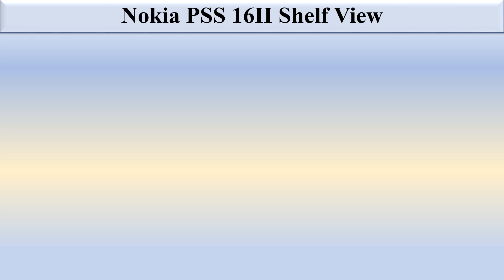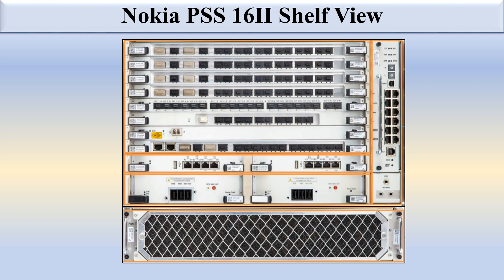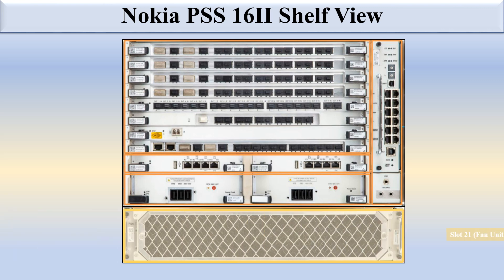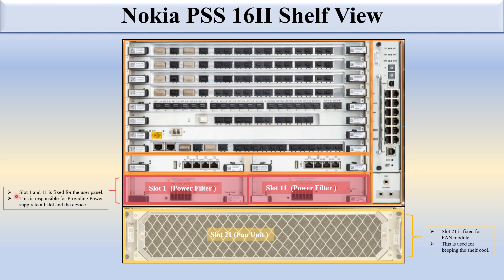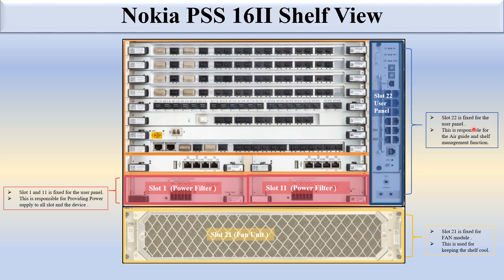Looking at the real physical view, the Nokia PSS 1611 looks like this. Slot 21 is fixed for the fan unit and is used to keep the shelf cool. Slot 11 is the power filter and slot 1 is the power filter. Slot 1 and slot 11 are fixed for the power module and are responsible for providing power to all other slots in the device. Slot 22 is fixed for the user panel and is responsible for the air guide and self-management function.